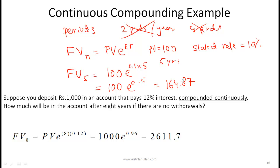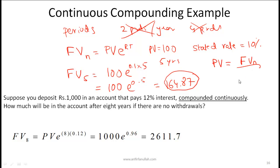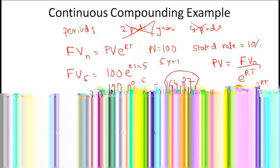What if you were given the future value and you needed to find the present value? That's pretty straightforward. The present value equals the future value at time n divided by e to the power of rt, or equivalently, future value at time n times e to the power of minus rt.